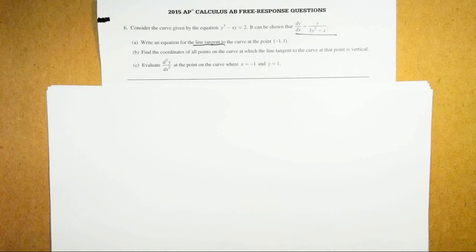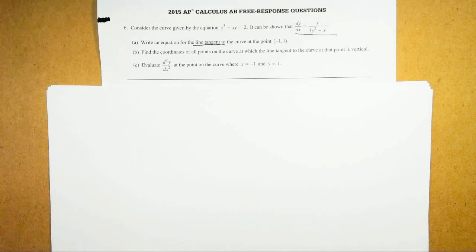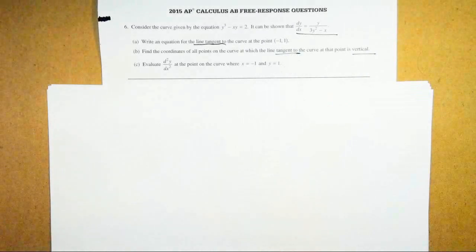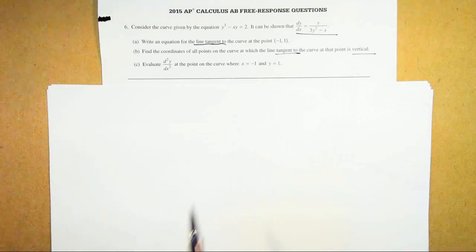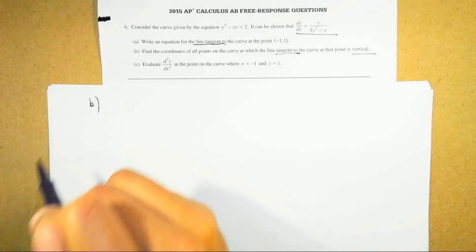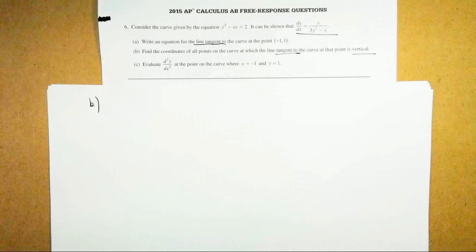Part B says: find the coordinates of all points on the curve at which the line tangent to the curve is vertical. The keyword is vertical. For a tangent line I think of the first derivative. To find vertical tangent lines, set the denominator of your derivative equal to zero. So to find vertical tangent lines, set the denominator of your derivative equal to zero.